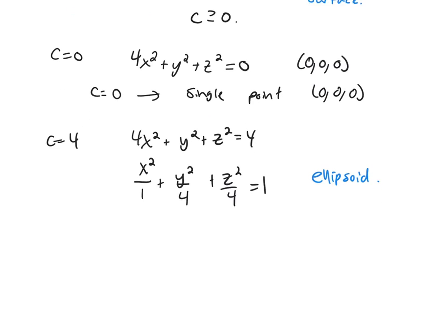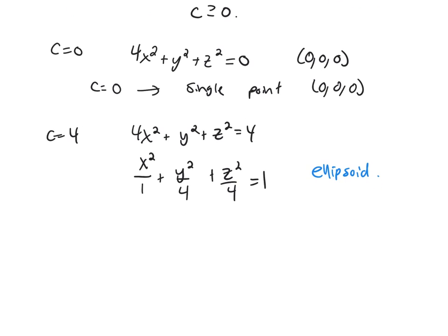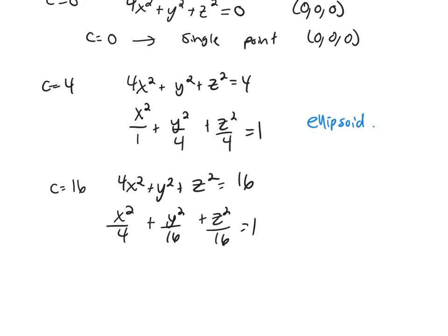Now let's go with C equals 16: 4x squared plus y squared plus z squared equals 16. If I divide, I'll get x squared over 4 plus y squared over 16 plus z squared over 16 equals 1. This is also the equation of an ellipsoid.